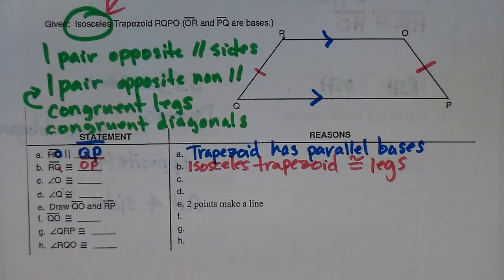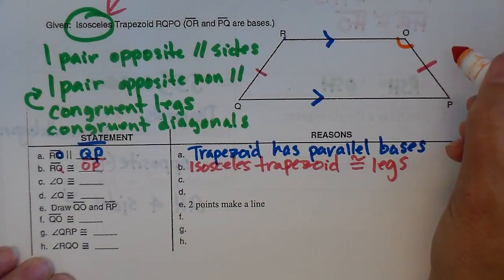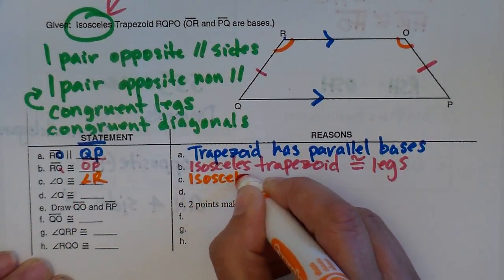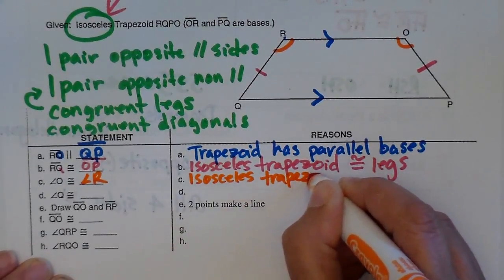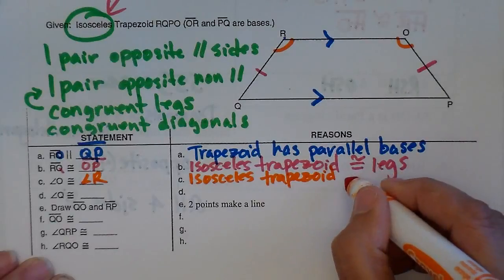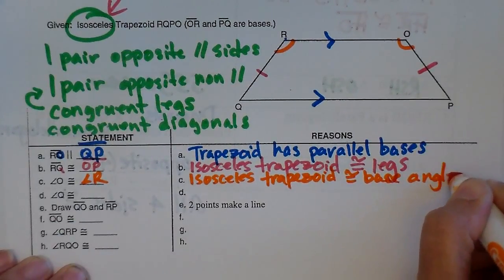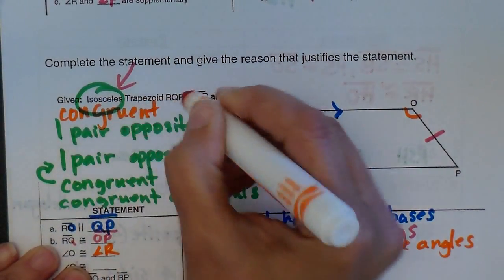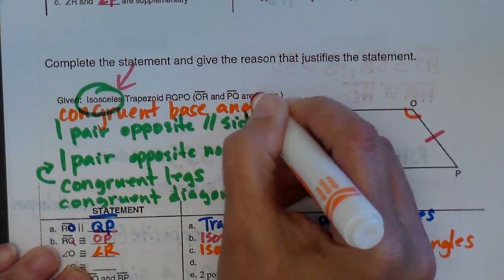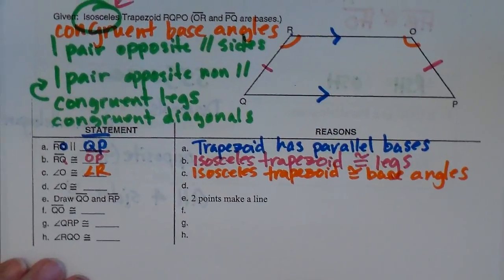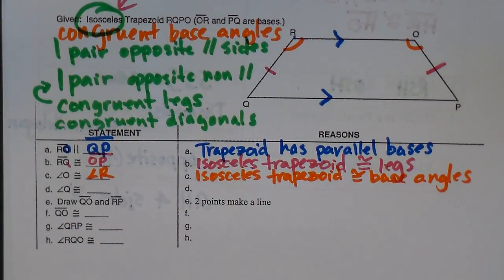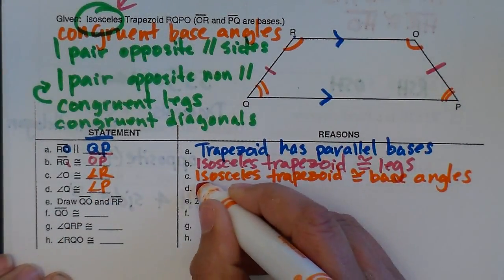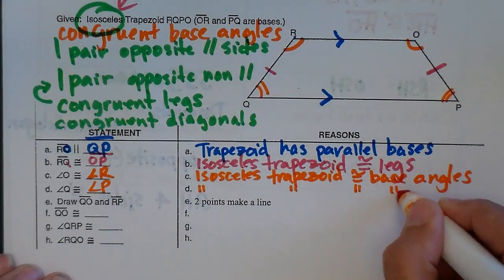So now I'm going to look at angle O. Angle O is congruent to angle R, and that's because the isosceles trapezoid has congruent base angles — that's one thing I forgot to put in there. It also has congruent base angles. So O is congruent to R, and Q is congruent to P. Again, that's because an isosceles trapezoid has congruent base angles.